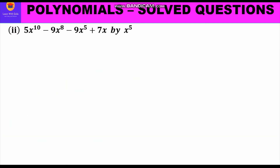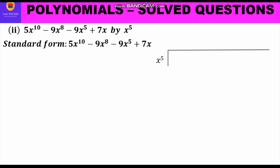Now we take up the second question: 5x¹⁰ minus 9x⁸ minus 9x⁵ plus 7x, to be divided by x⁵. It is already in standard form — 5x¹⁰, then minus 9x⁸, minus 9x⁵, then plus 7x — all in decreasing order of powers of x. We set up the problem: x⁵ comes outside and the dividend comes inside the bracket.